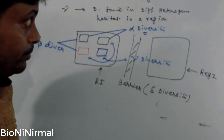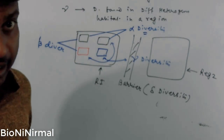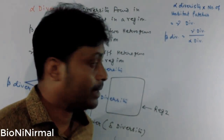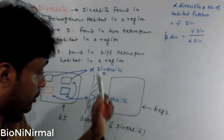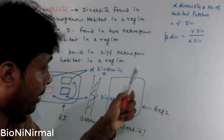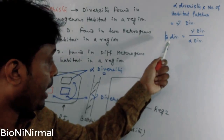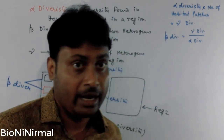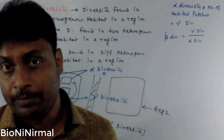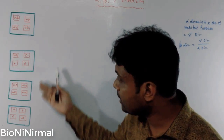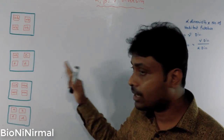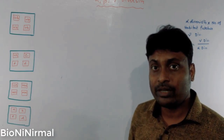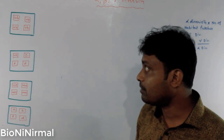Now let's look at the mathematical relationship between alpha, beta, and gamma diversity. Alpha diversity multiplied by the number of habitat patches equals gamma diversity. Beta diversity equals gamma diversity divided by alpha diversity. Here are a few problems where you can calculate alpha, beta, and gamma diversity.